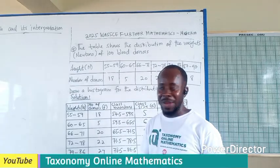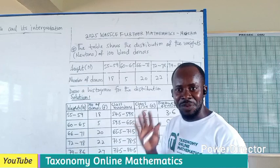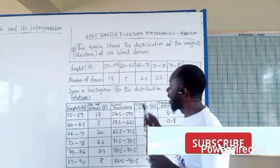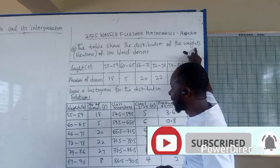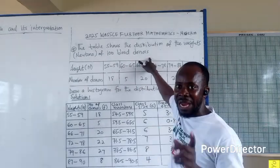Hello, welcome to faction number 5 of Nigerian 2025 FEDA Mathematics. This is on the histogram. The table shows the distribution of weights, which is in newtons, of 100 donuts, that's blood donuts.